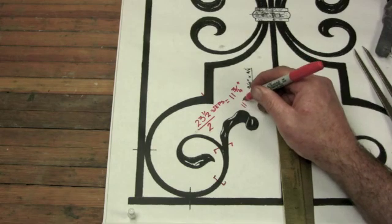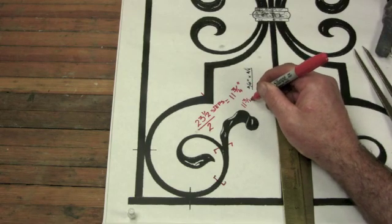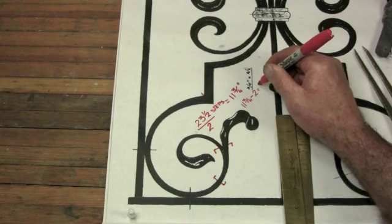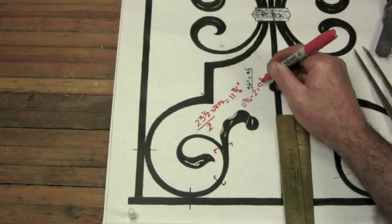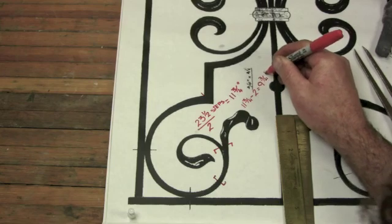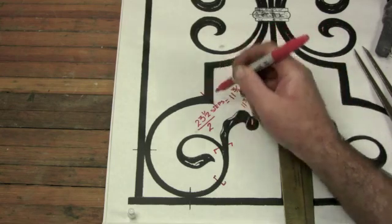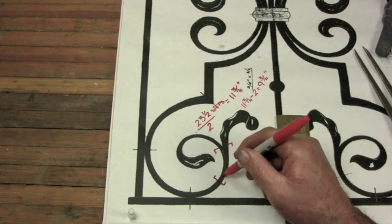So I take my eleven and three-quarters, and I subtract two inches to get nine and three-quarter inches long. Again, now this is from the datum here to the breakpoint of the weld for the two pieces.